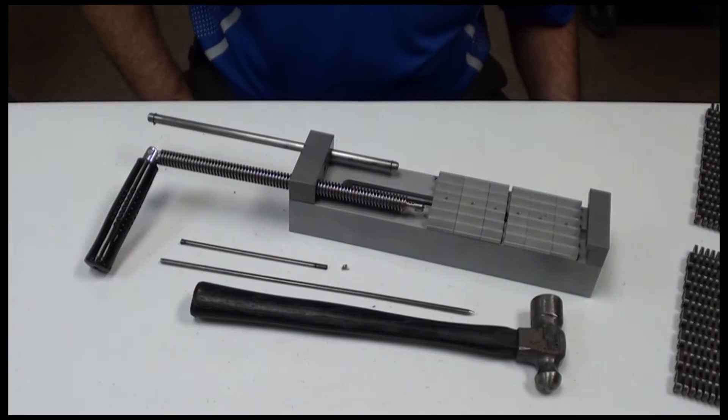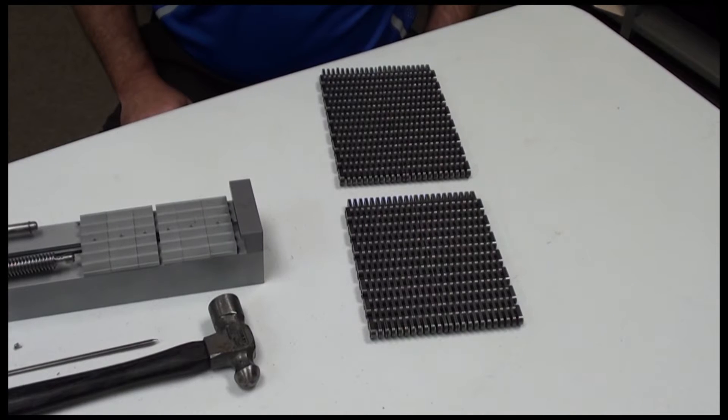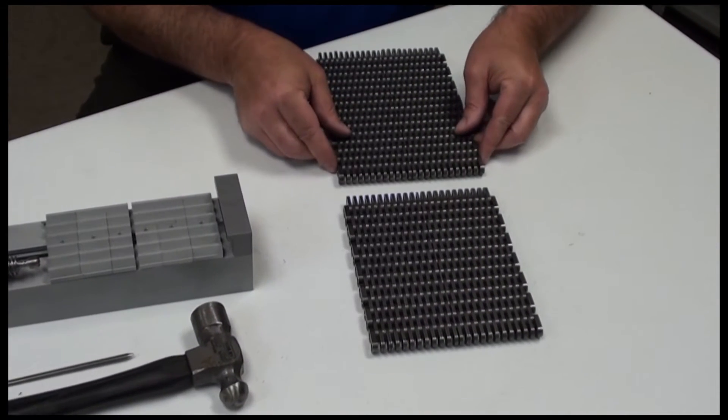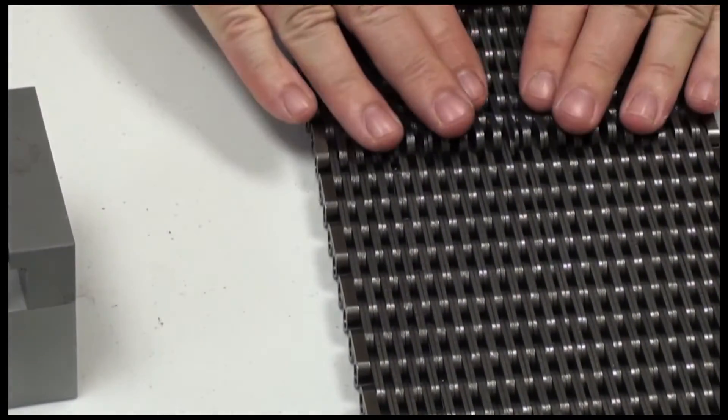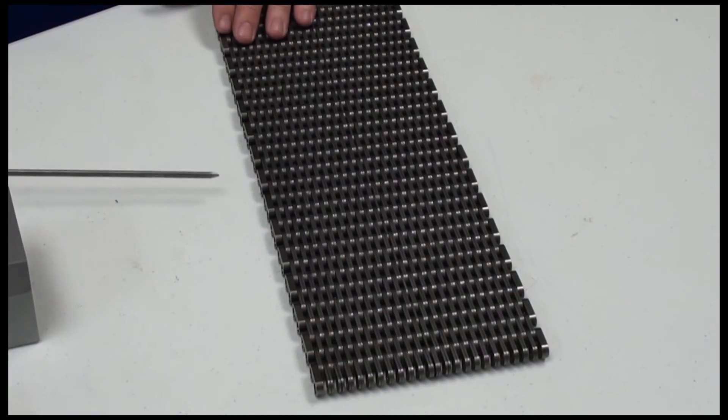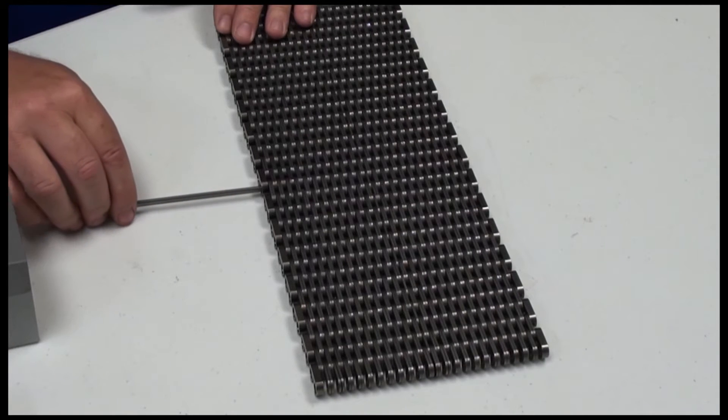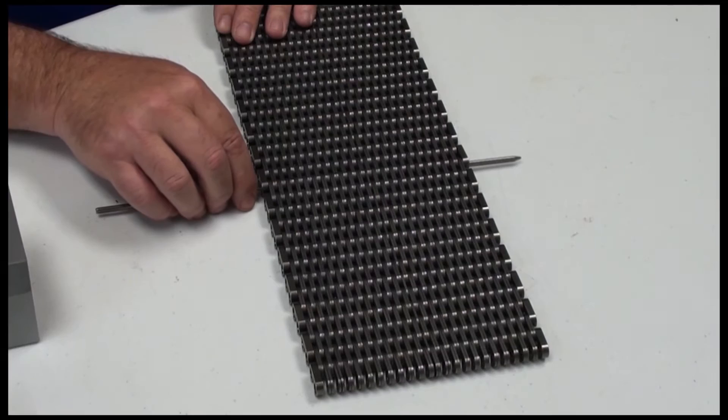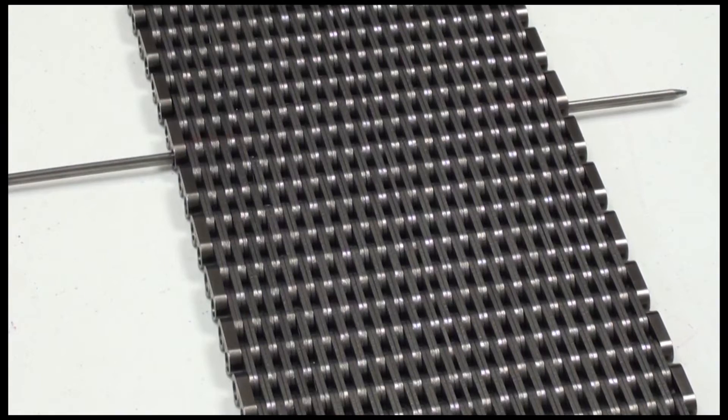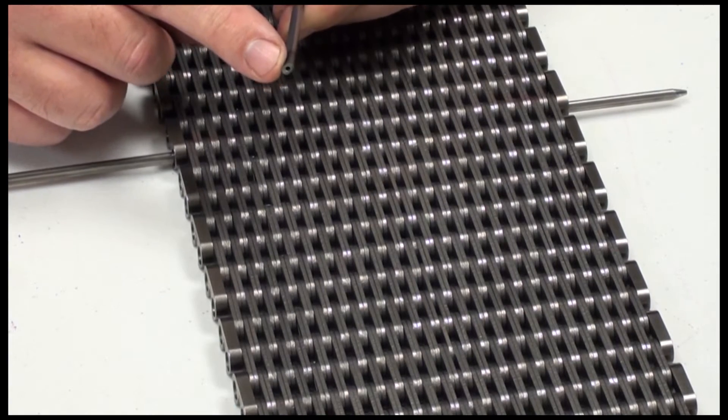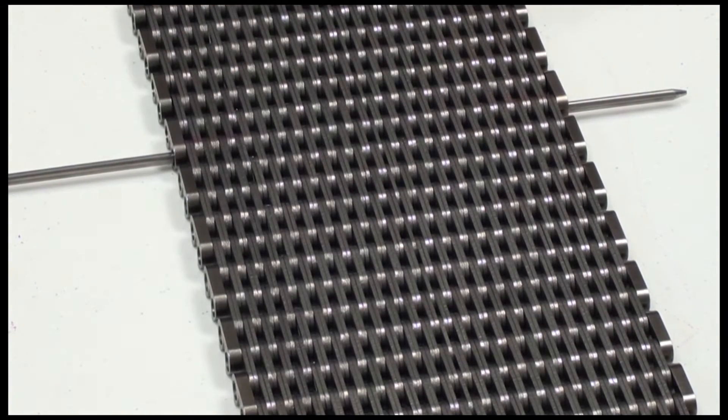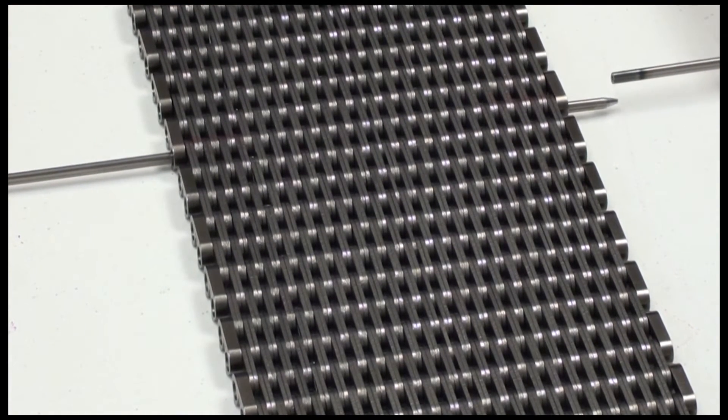Now bring the ends of the chain together and insert the assembly pin with the tapered end through the chain. This aligns the holes in the links. Pick up your connecting pin and note the end that is drilled. From the back of the chain, insert the connecting pin through the chain, drilled end first.